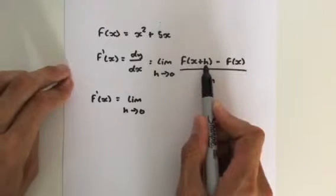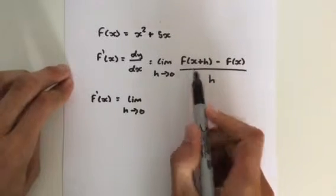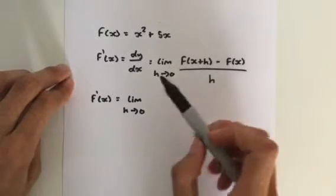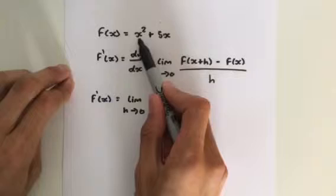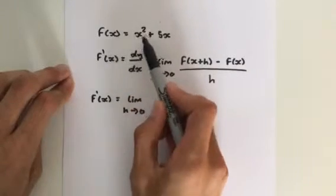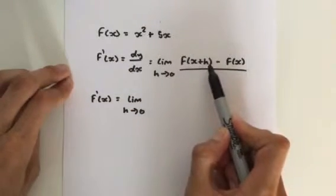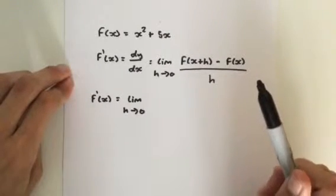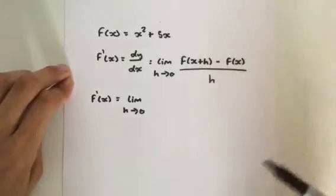So this term here, in the last example, we got x plus h all squared. So all you need to do is, for where the x is in this function, you replace with x plus h. If you're a bit unsure on function notation, please watch my video on function notation. It should be pretty helpful for you.